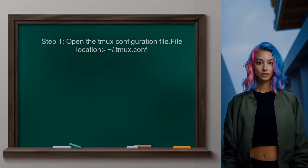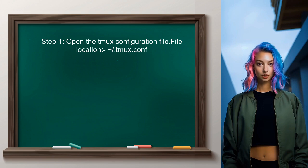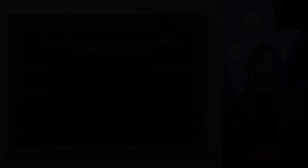To create a shortcut for splitting panes in Tmux to the left or above, you first need to open your Tmux configuration file. This file is usually located at .tmux.conf in your home directory.